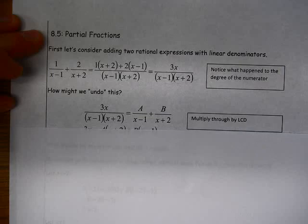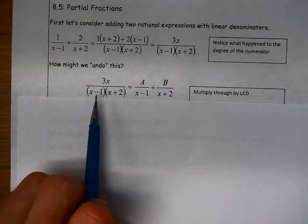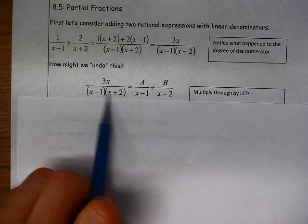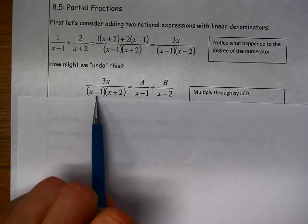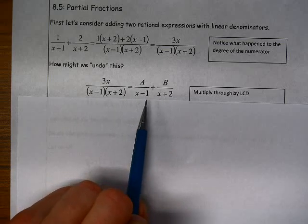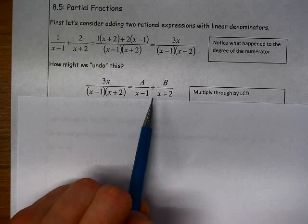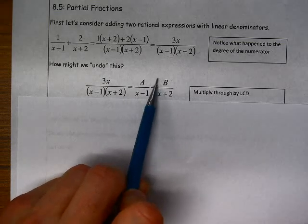So to do that, we could say, well, if we have a quadratic denominator and a linear numerator, then the factored form of this is (x-1)(x+2). And we can separate those denominators out. And we know that we're going to have a constant in this numerator and a constant in this numerator.